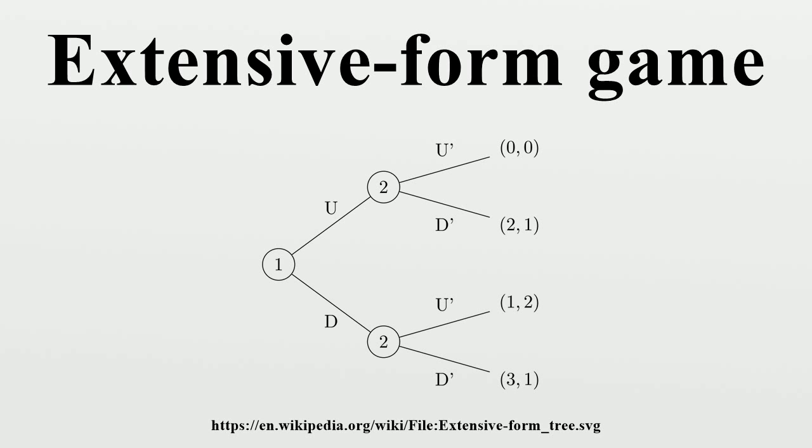If the information set contains more than one node, the player to whom that set belongs does not know which node in the set has been reached. In extensive form, an information set is indicated by a dotted line connecting all nodes in that set, or sometimes by a loop drawn around all the nodes in that set. If a game has an information set with more than one member, that game is said to have imperfect information. A game with perfect information is such that at any stage of the game, every player knows exactly what has taken place earlier in the game, i.e., every information set is a singleton set. Any game without perfect information has imperfect information.